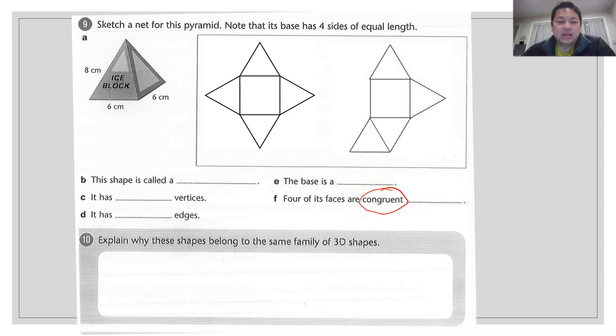And last but not least, they say explain why these shapes belong to the same family of 3D shapes. So I will use this word called apex. Do some research on this and find out why is there such a term apex being used to describe the tetrahedron as well as a square base pyramid. And from there, use this word as your backbone to describe these two shapes. That's all for today's lesson. Thank you very much.